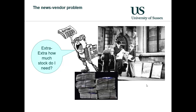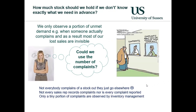The news vendor problem is an interesting class of issues around inventory management. It aims to determine how much stock is needed to meet demand, whilst minimising the chances of overstocking or understocking and the costs associated with these. One of the problems with this type of sales process is how much stock we should hold if we don't know exactly what we need in advance — we have to make a prediction, a forecast.